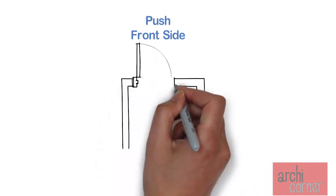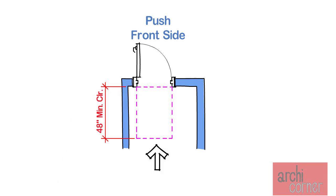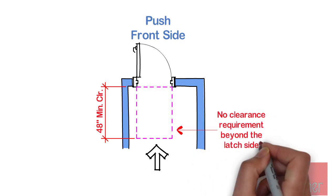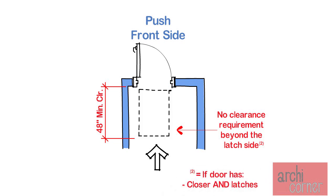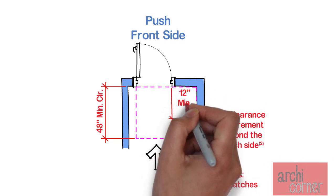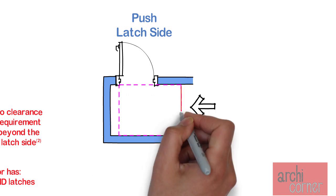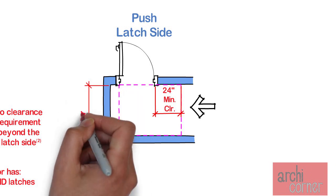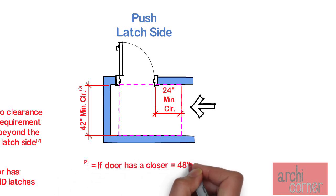Now let's move on to the options for the push side. When approaching from the front push side, perpendicular to the doorway, the door must have 48 inches minimum clear. Parallel to the doorway beyond the latch side, there is no requirement for clearances — however, there is one exception: if the door is provided with both a closer and it latches, then the door must have 12 inches minimum clear beyond the latch side. When approaching from the latch side, parallel to the doorway beyond the latch side, there has to be 24 inches minimum clear. Perpendicular to the doorway, the door must have 42 inches minimum clear — with an exception: if the door is provided with a closer, 48 inches minimum clear perpendicular to the doorway is required.